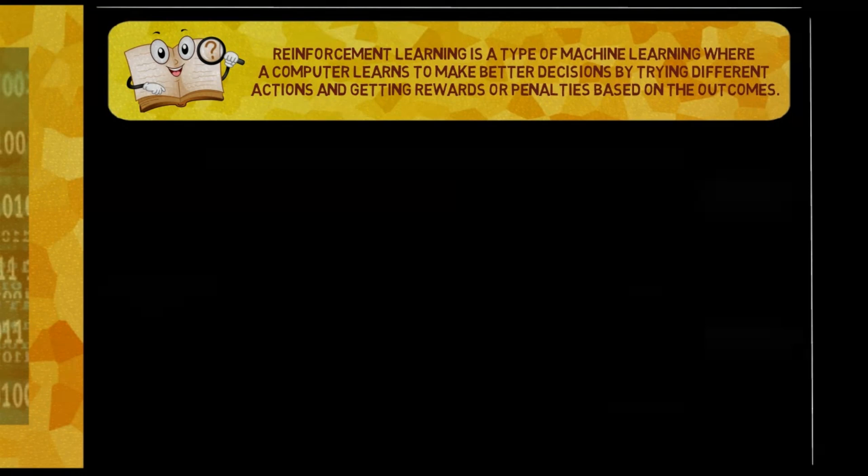Reinforcement learning is a type of machine learning where a computer learns to make better decisions by trying different actions and getting rewards or penalties based on the outcomes.